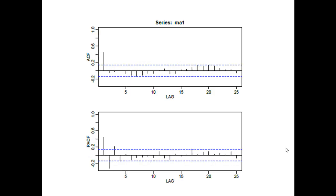The MA model is kind of the opposite of the AR model. If you find that in the PACF chart there are a few significant spikes at the beginning — no matter if they are positive or negative — and they quickly decrease to the zero line in the middle, and at the same time you only have one or two significant spikes in the ACF chart, then you should use an MA model. To determine the order, we count the number of significant spikes in the ACF chart. In this case only one is significant, so we use MA1 to analyze this time series.